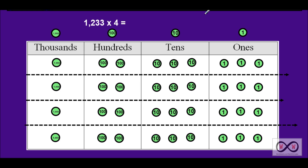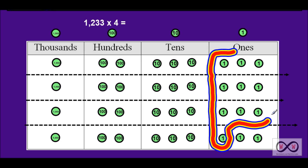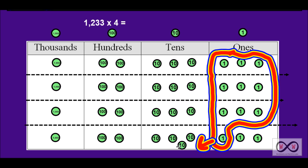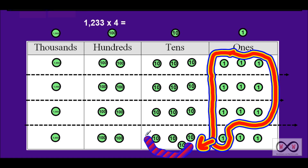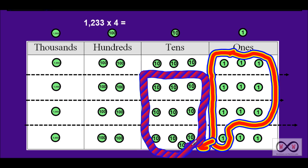Now we're going to bundle starting with the ones place. We can see we have three, six, nine — and we add one more: nine plus one equals 10. We'll bundle those up and move them next door, trading them in or regrouping for another 10. Now we'll start to bundle the tens. We have four on the bottom, plus three is seven, plus three is 10. That works nicely, so we've bundled that group up and we'll regroup — trading our 10 tens in for 100.